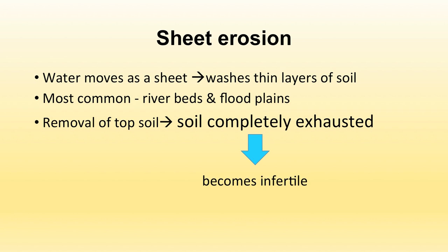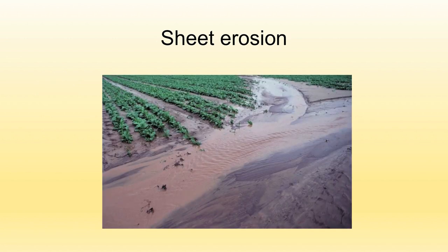The second type is sheet erosion. Soil or sediment is removed in the form of a sheet over a large area — water moves as a sheet and washes away thin layers of soil with it. It is most commonly found in river beds and flood plains. There is removal of topsoil, so the soil becomes completely exhausted and infertile. The muddy water seen carries sediment — the top layer of soil — like a sheet from the earth's surface.